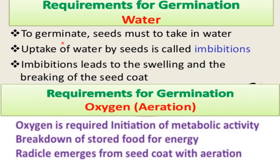To germinate, a seed must take in water. Uptake of water by the seed is called imbibition. Imbibition leads to swelling and breaking of the seed coat. Oxygen is also required, initially for metabolic activity, breakdown of stored food for energy, and for radicle emergence from the seed coat.